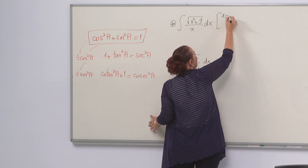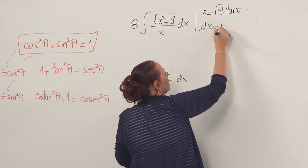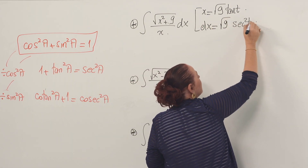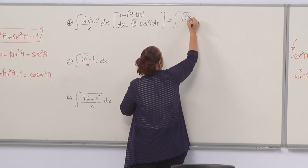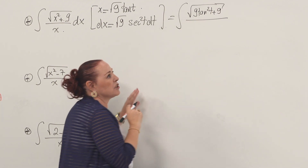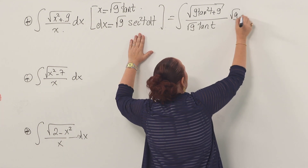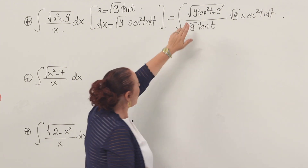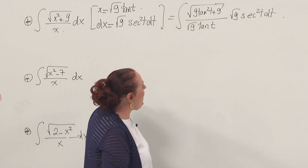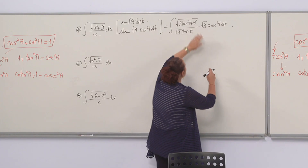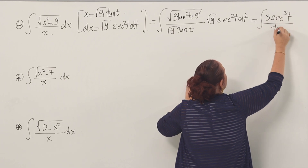But this is 9, so I need a factor of 9 inside the square root. I take the square root of 9, which is 3, and write x = 3 tan(t), so dx = 3 sec²(t) dt. Under the square root I now have 9 tan²(t) + 9, giving a factor of 9 times (1 + tan²(t)) = sec²(t). Coming out of the square root it becomes 3 sec(t), leaving 3 sec³(t) over tan(t) dt.